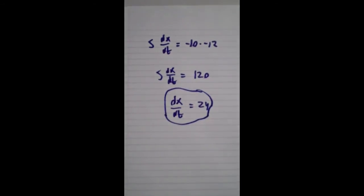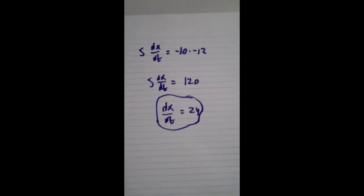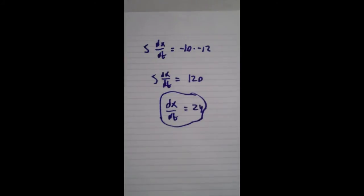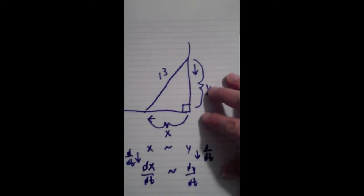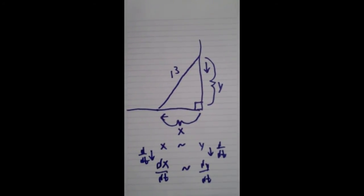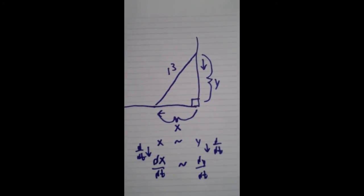So let's check and make sure this is reasonable. dx/dt should be positive because x is increasing as the ladder slides out. Going back to our original diagram. x is increasing as the ladder slides out. So dx/dt should be positive, so that's a reasonable answer.